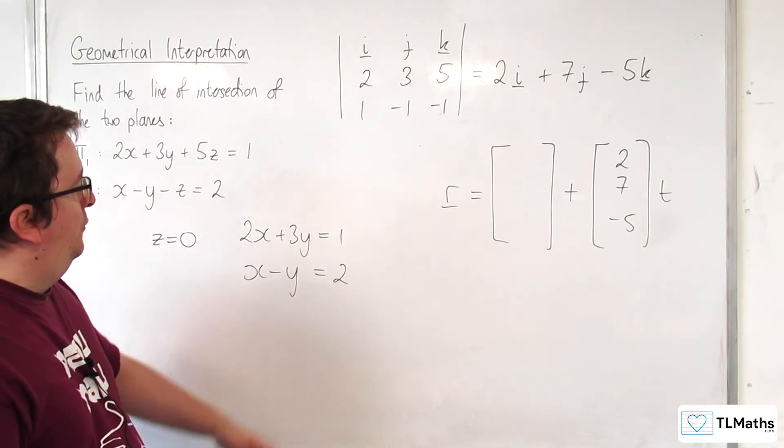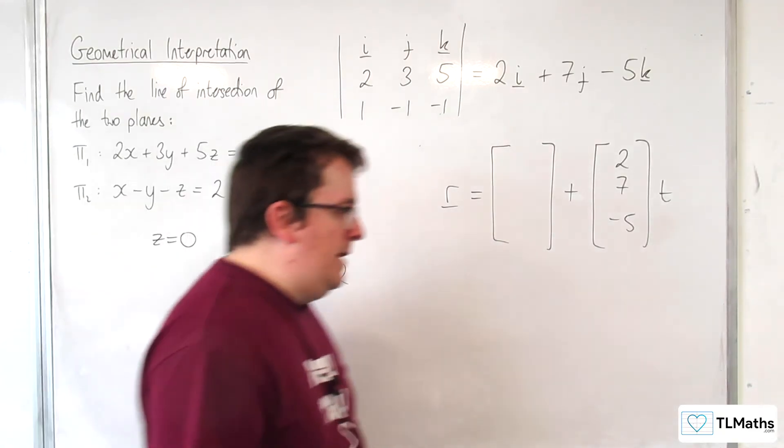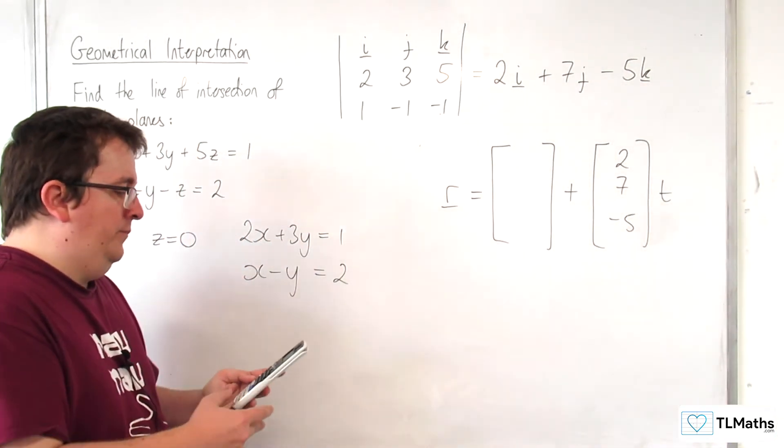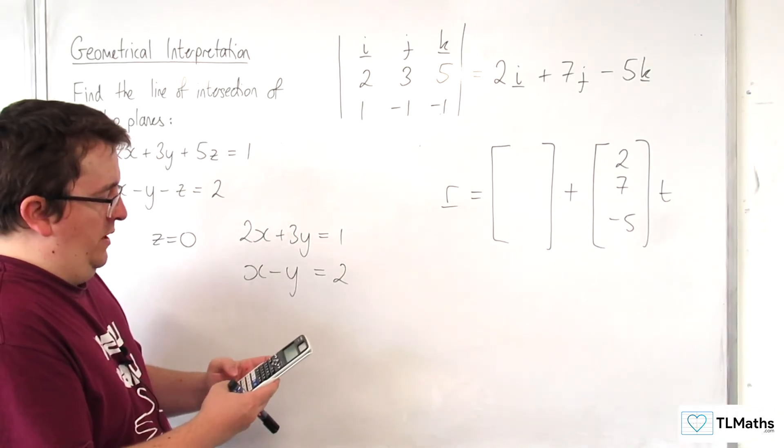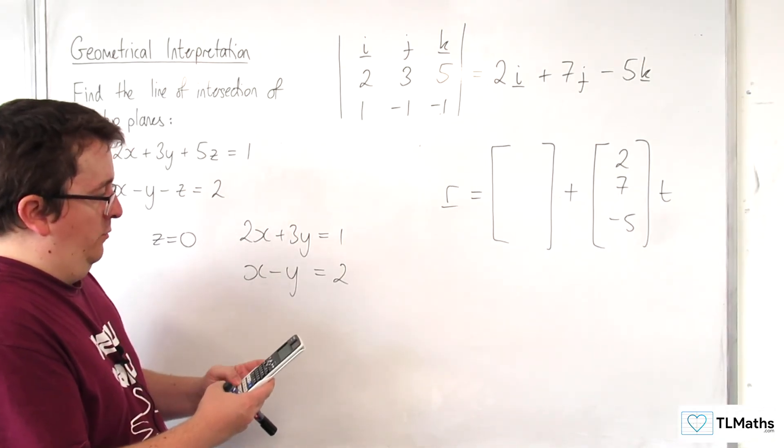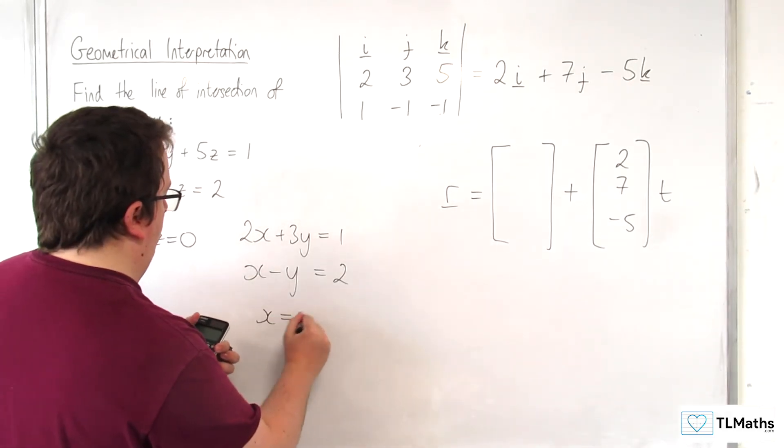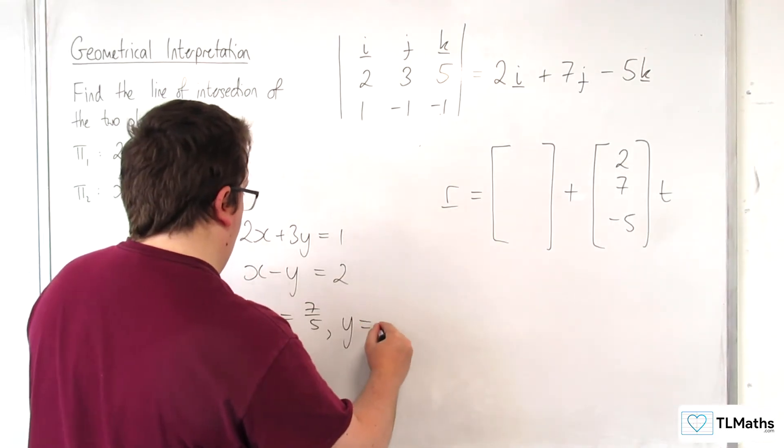So now I need to solve these two simultaneous equations. I'm just going to get my calculator to do that. You can do it algebraically if you like. 2, 3, 1, 1, -1, 2, and we get X is 7/5 and Y is -3/5.